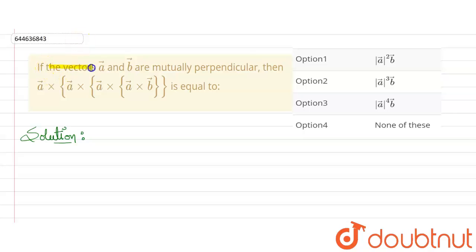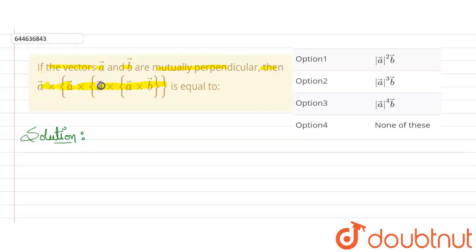In this question, it is given that vectors a and b are mutually perpendicular, meaning the angle between a and b will be 90 degrees. We need to find the value of a particular expression, and four options are given — we need to check which option matches the answer.